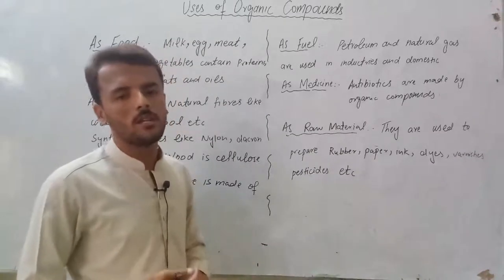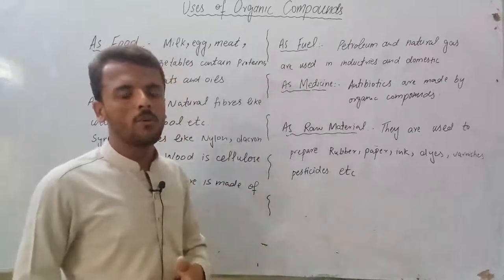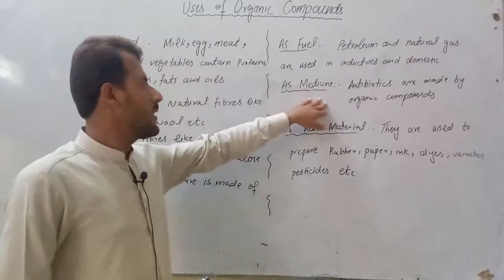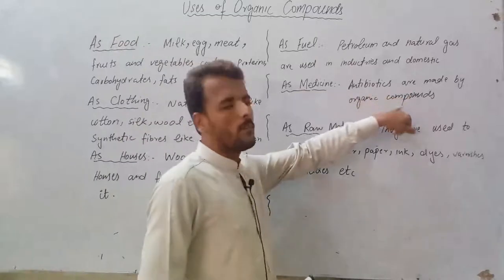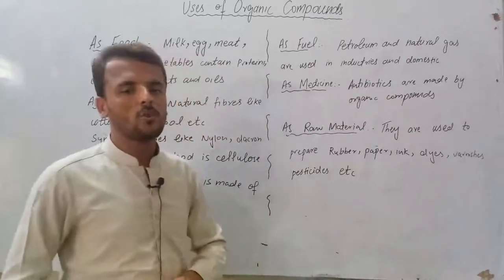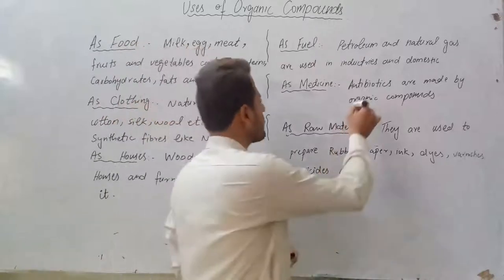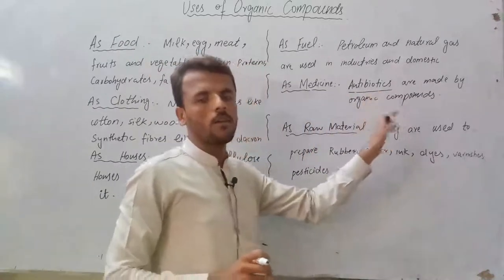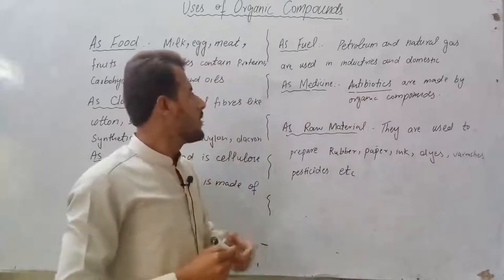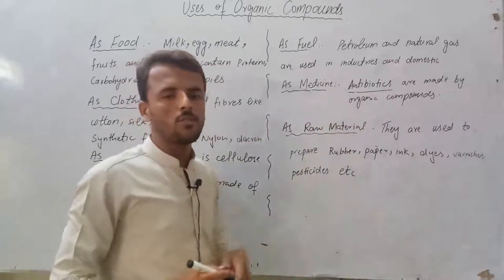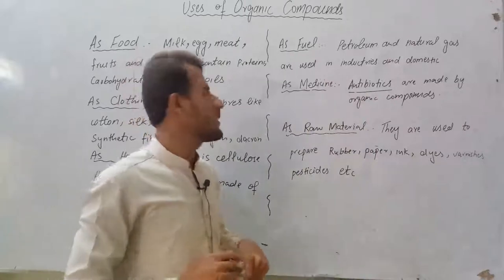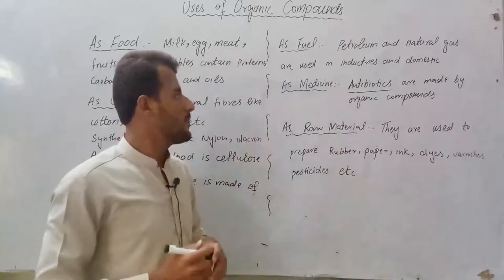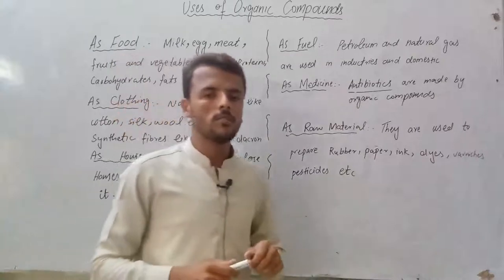We also use organic compounds as medicine. Antibiotics are made from organic compounds. The word antibiotic has two parts: anti, meaning killing, and biotics, mainly referring to bacteria. So antibiotics are substances that can kill or weaken harmful bacteria. Sulfonamides are one example used as antibiotics.